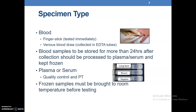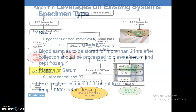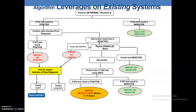Frozen samples must be brought to room temperature before testing. The rapid test for recent infection is going to leverage on existing systems. This is the Zimbabwe National HIV rapid test algorithm. We can see by the yellow box where the rapid test for recent infection is to be placed — among the HIV-positive patients who have been confirmed by the second test.